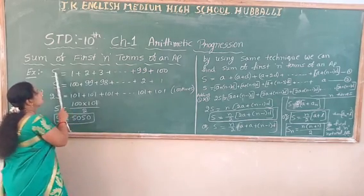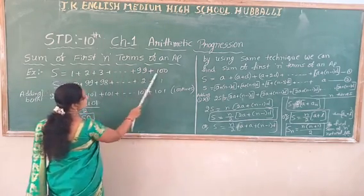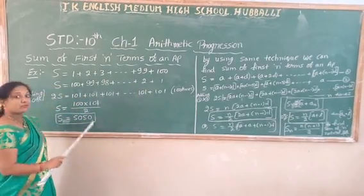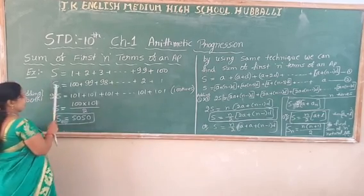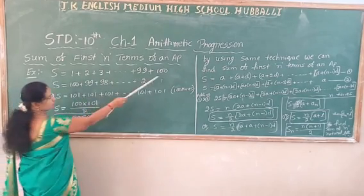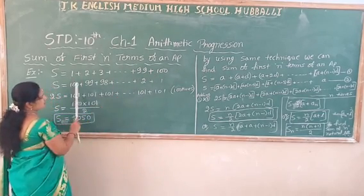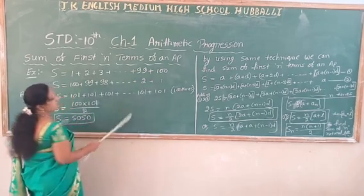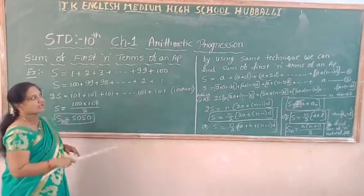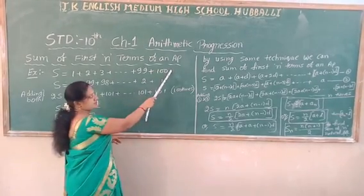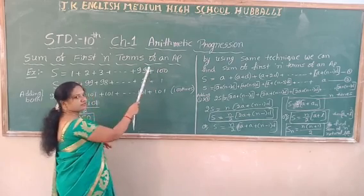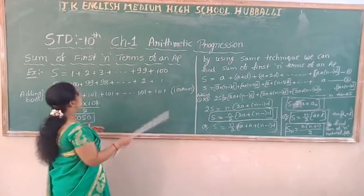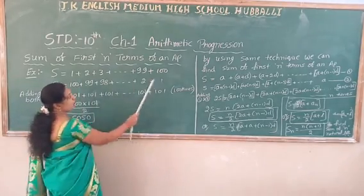The same, I am going to write in reverse order. Reverse means from the last term first: I write 100, next 99, next 98, going on decreasing up to 1. I started from 100 and I end at 1 in the second equation. In the first it is increasing from 1 to 100; here it is decreasing from 100 to 1.